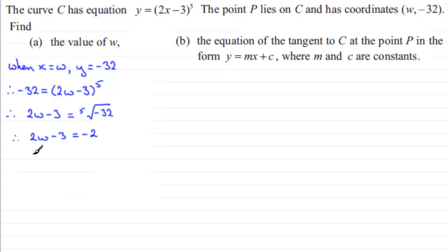So you've therefore got 2w minus 3 equals minus 2. Add 3 to both sides, you get 2w equals 1 and then divide both sides by 2 and you end up with w equaling a half. Alright, so that's our first part then, part A.